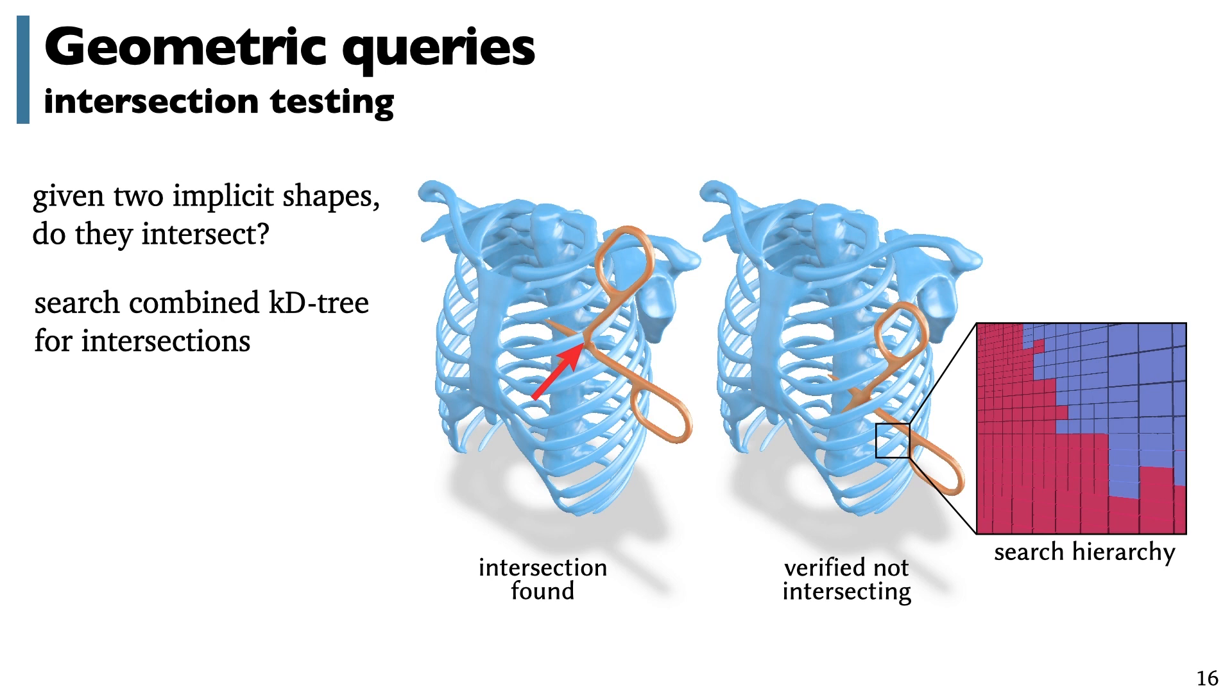We can also come back to this question of intersection and test whether two shapes overlap by building a combined KD tree where we discard any node which is strictly outside of either shape. The result is either a guarantee that the two shapes do not overlap or some point in their intersection.